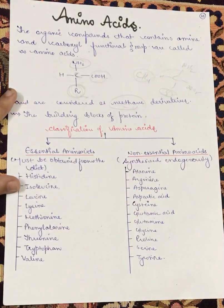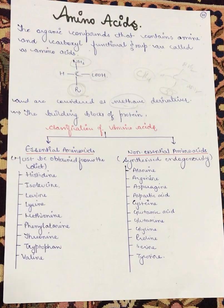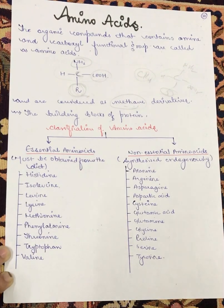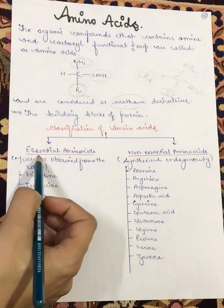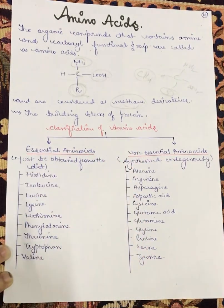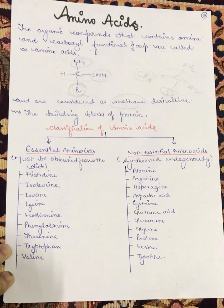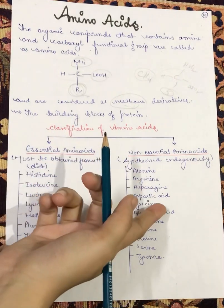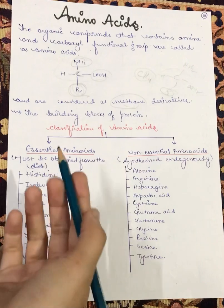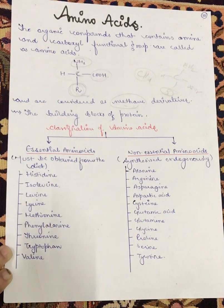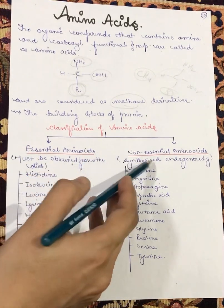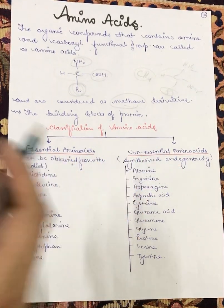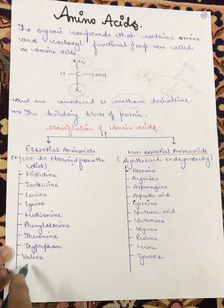The most important thing about amino acids is that these are the building blocks of protein. Now, let's see the classification of amino acids. Essential amino acids must be obtained from the diet, while non-essential amino acids are synthesized endogenously by the body.